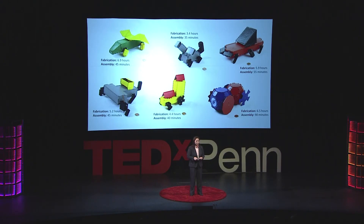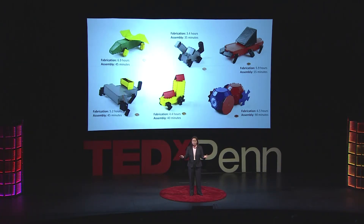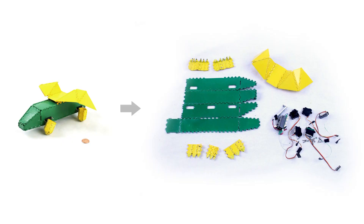We wondered to ourselves, a lot of these robot parts are complex and we probably want to 3D print them, but is there a way we can make the robot flatter? And it turns out you can. Using a combination of 3D printing and origami-inspired design, you can make these same structures, except flat.